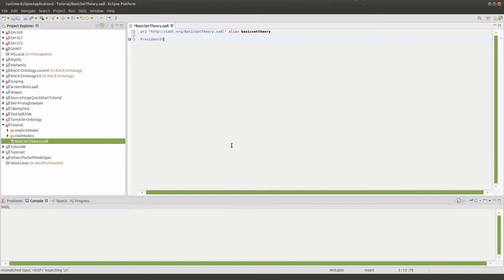We now use content assist control space to fill in a URI and an alias using the defaults. This establishes the basic requirements of a model. And now we're able to create the class President of USA, stating it is a class. And then we can say that George Washington is a President of USA, meaning that he is a member of the class. And again, we use content assist to help us fill in without having to worry about exact matching and typing.